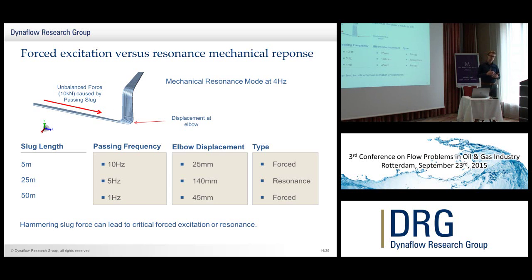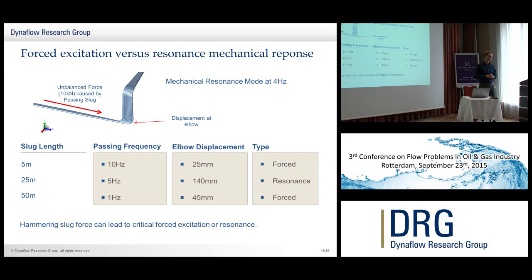This can also relate to resonance. If you have a piping system, it has certain mechanical resonance modes. If the excitation force from your slugs is in the same order of magnitude as these eigenmodes, you get resonance. It's always a little tricky to determine if you have resonance, since the excitation is not known in that detail. For compressors or pumps you really know the different frequencies in detail — that is a little more tricky here. Sometimes it is clear from measurements that you have resonance, and sometimes you have different eigenmodes excited at different times.